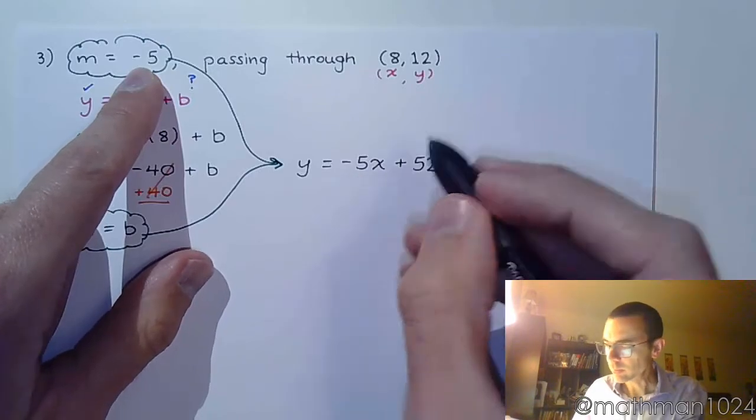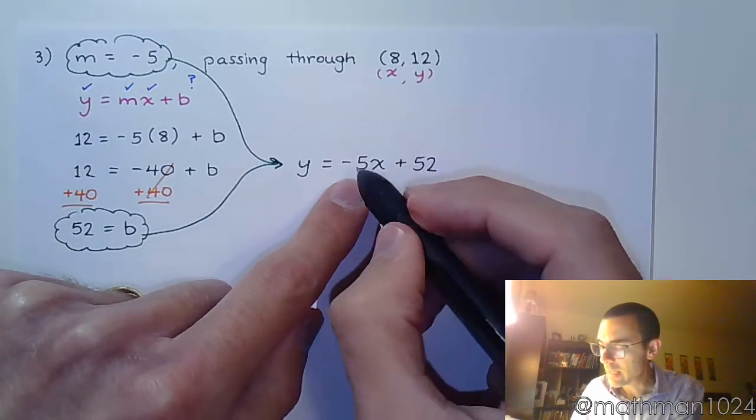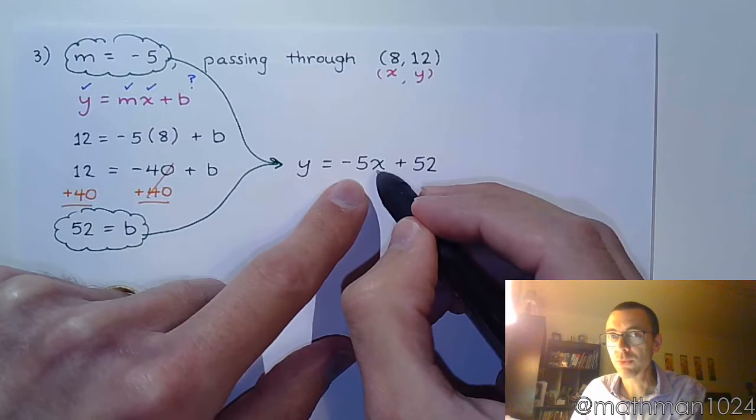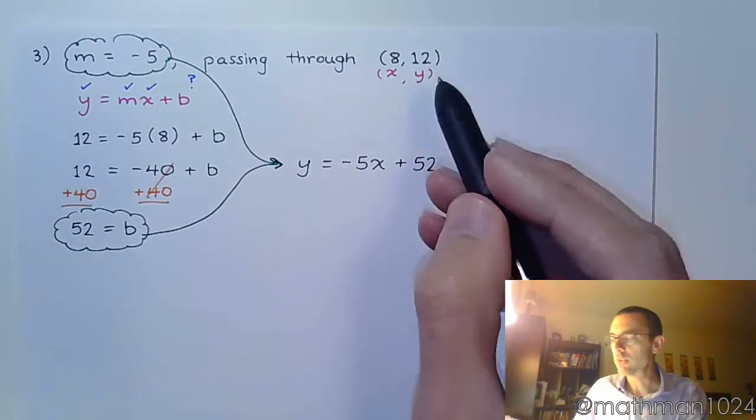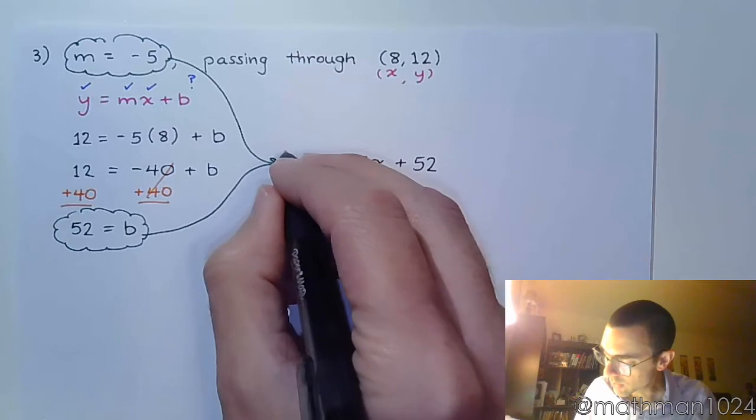Clearly, you've got the right slope. If I plug in 8, negative 5 times 8 is negative 40. And negative 40 plus 52 is going to give you a y value of 12. So everything works out here.